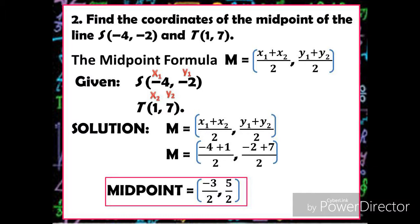Solution: we're going to substitute the values of X₁, Y₁, X₂, and Y₂. X₁ is negative 4 plus X₂ is 1, over 2; and Y₁ is negative 2 plus Y₂ is 7, over 2. Negative 4 plus 1 is negative 3, so we have negative 3 over 2. Negative 2 plus 7 is positive 5, so we have 5 over 2. Therefore, the midpoint of line segment ST is (−3/2, 5/2).